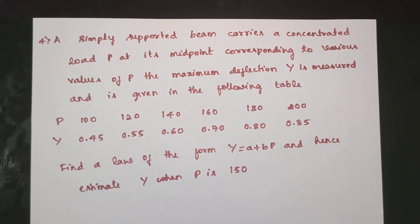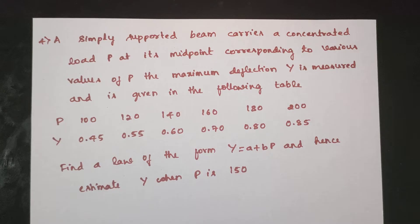A simply supported beam carries a concentrated load P at its midpoint. Corresponding to various values of P, the maximum deflection Y is measured and given in a table where P value is equal to Y value. Find a law of the form Y is equal to A plus BP, and hence estimate Y when P is 150.